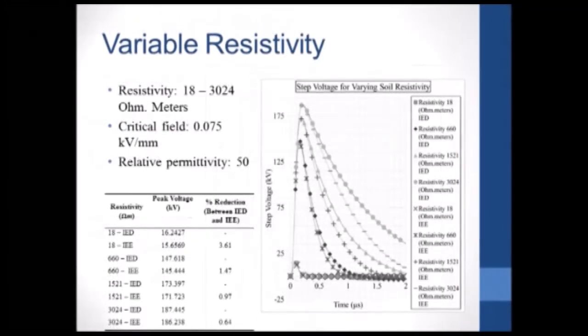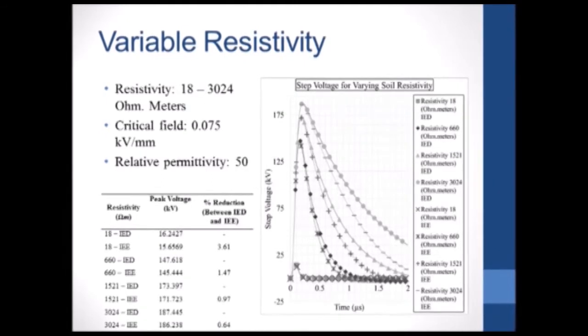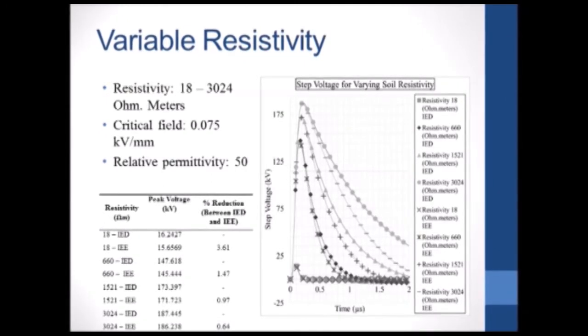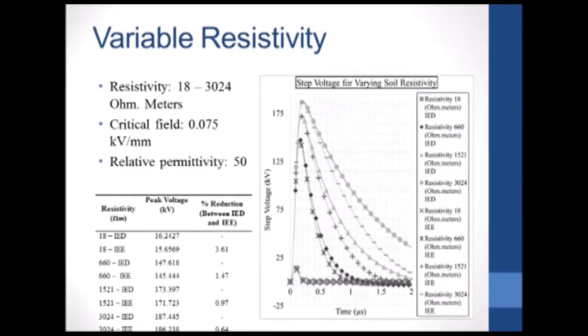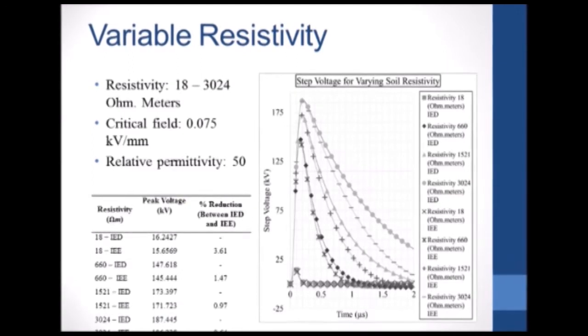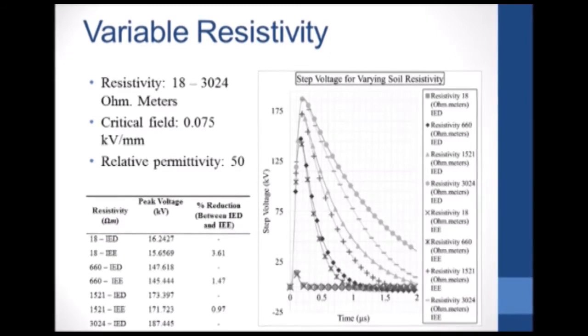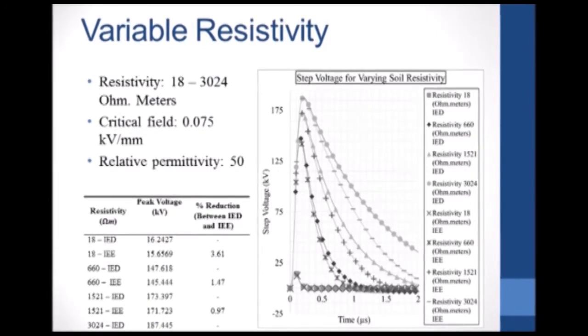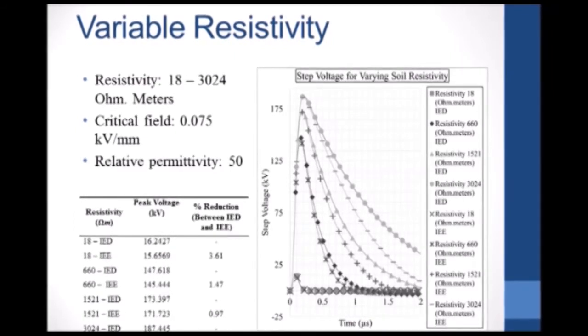For the variable resistivity run, the resistivity was increased from 18 to 3,024 ohm meters in steps of three. The critical field was set to 0.075 kV per mm, which is the worst case scenario for ionization onset, and the relative permittivity was fixed at 50. As you can see from the table, the effect of soil ionization again seems to be reduced with increasing resistivity.